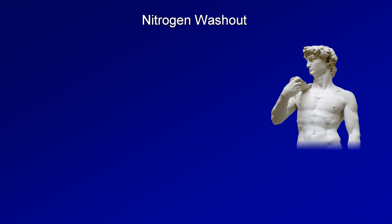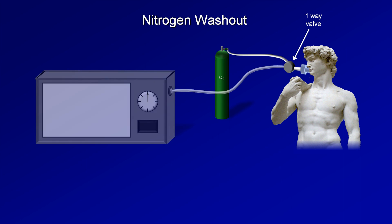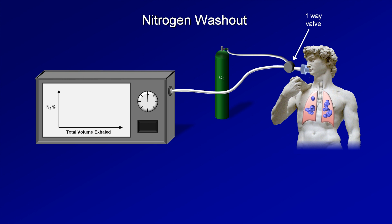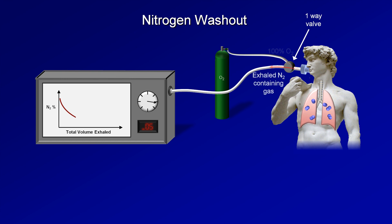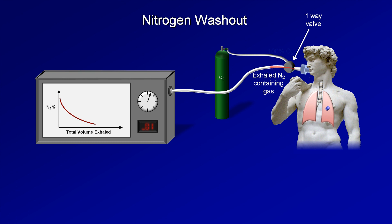Next is nitrogen washout. In this technique, the patient breathes through a mouthpiece that has two one-way valves. One valve connects to a source of 100% oxygen. The other connects to a device which records both the volume of gas exhaled as well as the nitrogen concentration over many breaths. The patient starts at their functional residual capacity, breathes in 100% oxygen, and exhales out the nitrogen-containing gas initially left within their lungs into the device. Not all of the nitrogen within the lungs will get expelled with each breath, but with the patient taking successive breaths over the course of several minutes, the nitrogen level in the exhaled gas will asymptotically approach zero. Using standard test methodology, the test is considered over once the nitrogen concentration is below 1.5% for three successive breaths.